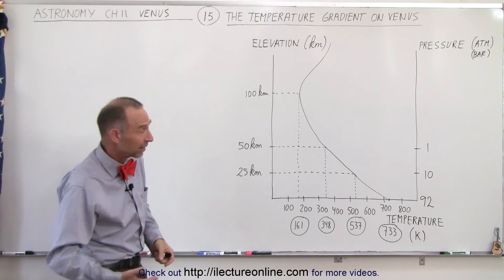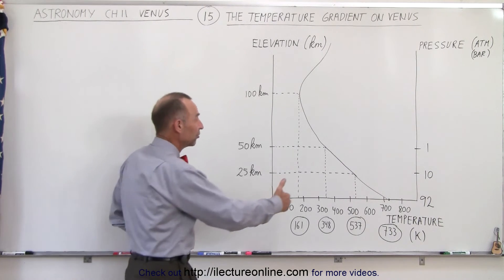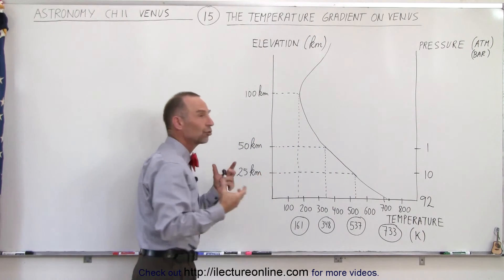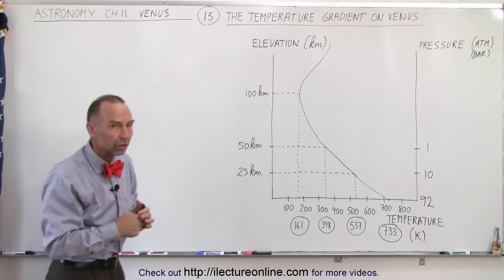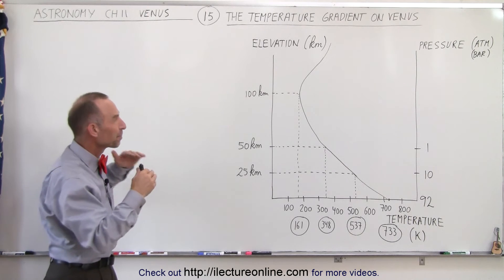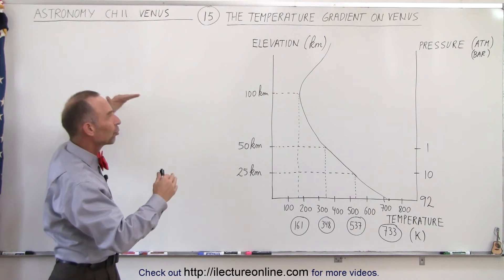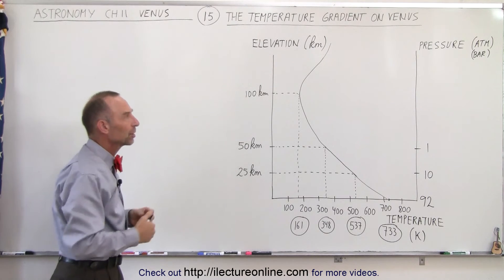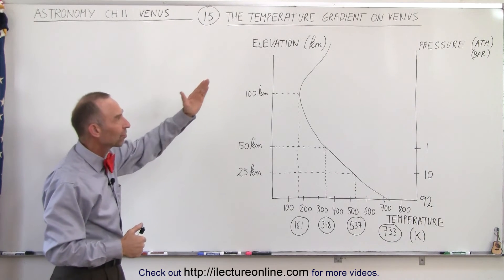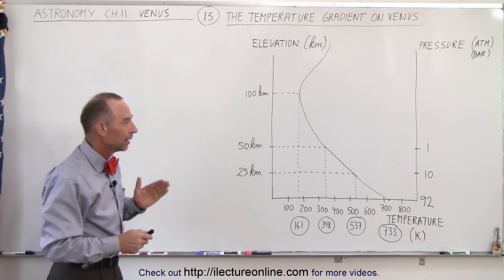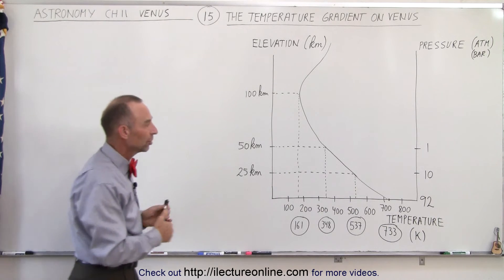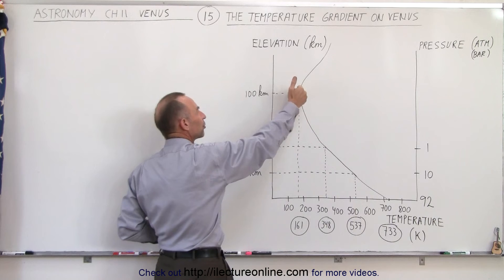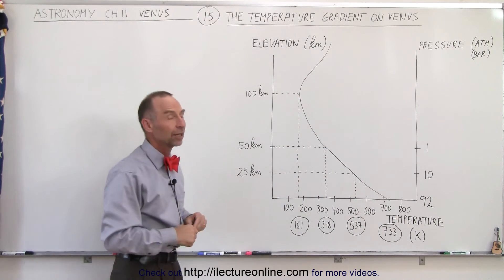And then, just like you would expect — the same thing happens on the Earth — as you continue to go higher up in the atmosphere, you start getting a heat source caused by the interaction between the solar wind and the upper atmosphere particles, contributing some additional energy, and the temperature begins to climb again. But until you get to that elevation, there's a pretty smooth dropping of the temperature until you reach a height of about 100 kilometers.